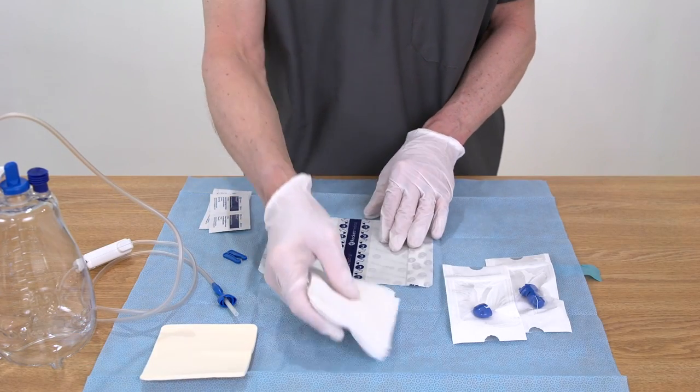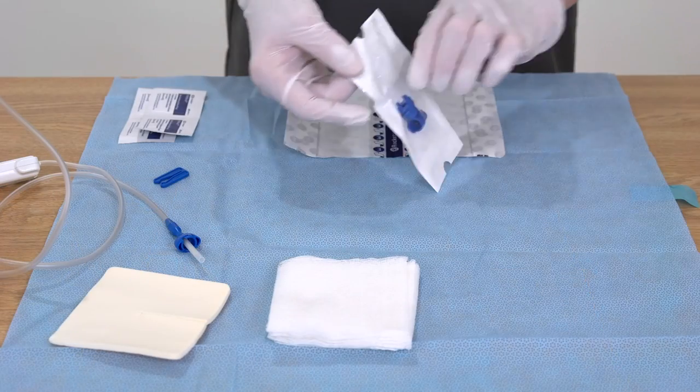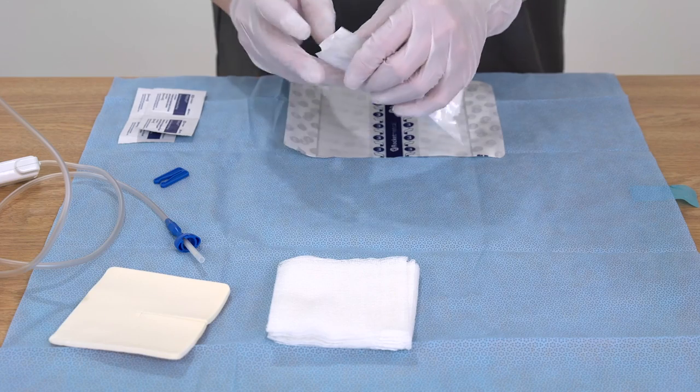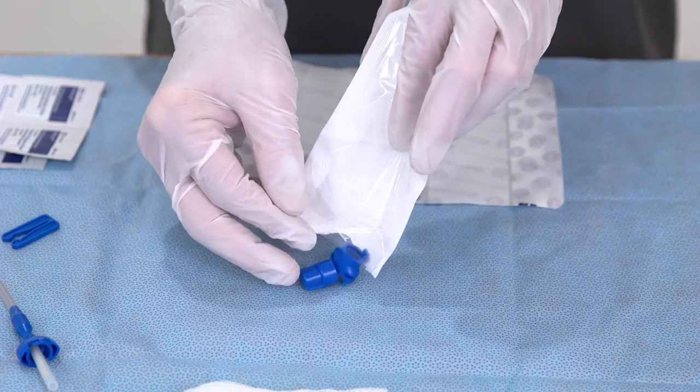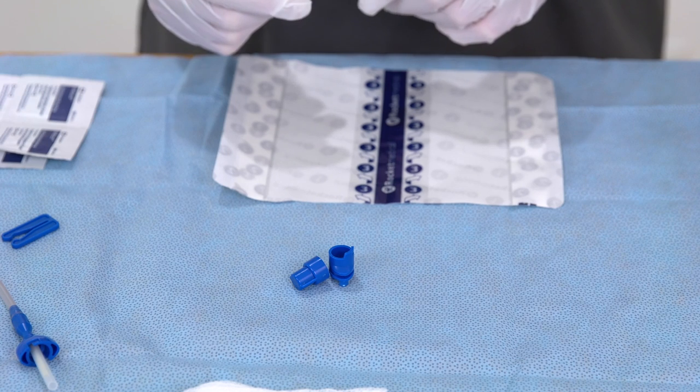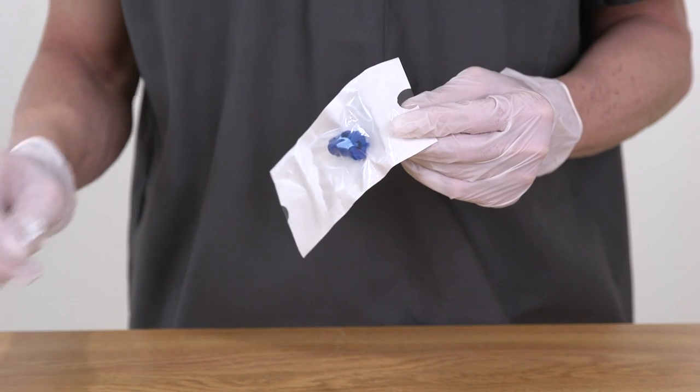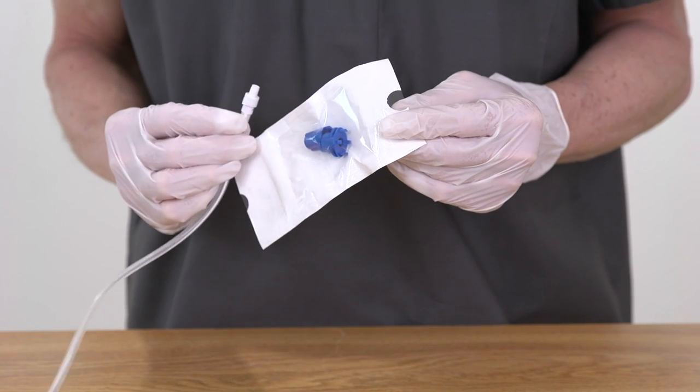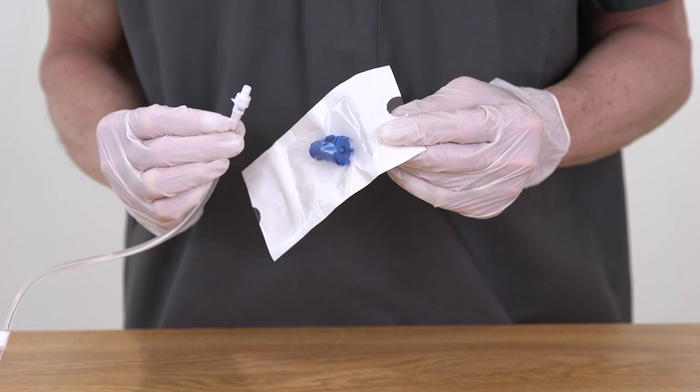Separate the contents for easier access. Peel open the packet containing the catheter cap and adapter and drop these into the center of the sterile field. Remember that the adapter will only be used if you are attaching the ROCKET IPC drainage kit to a catheter that looks like this.